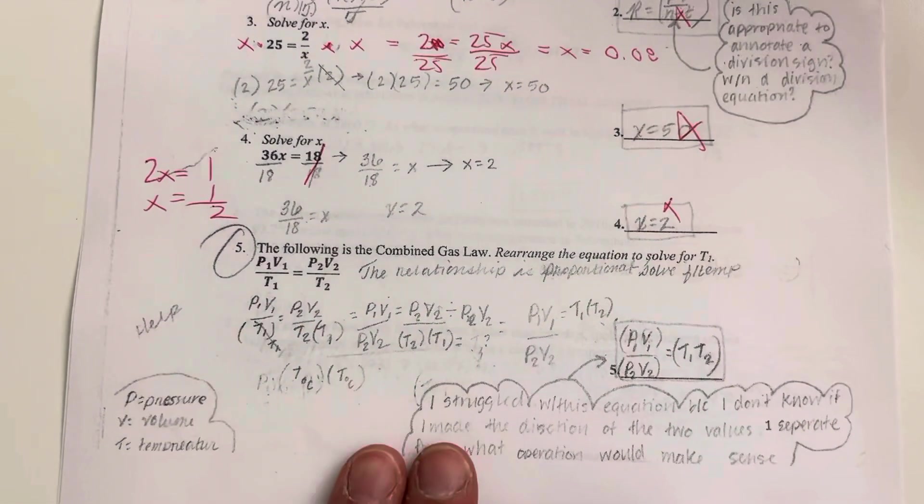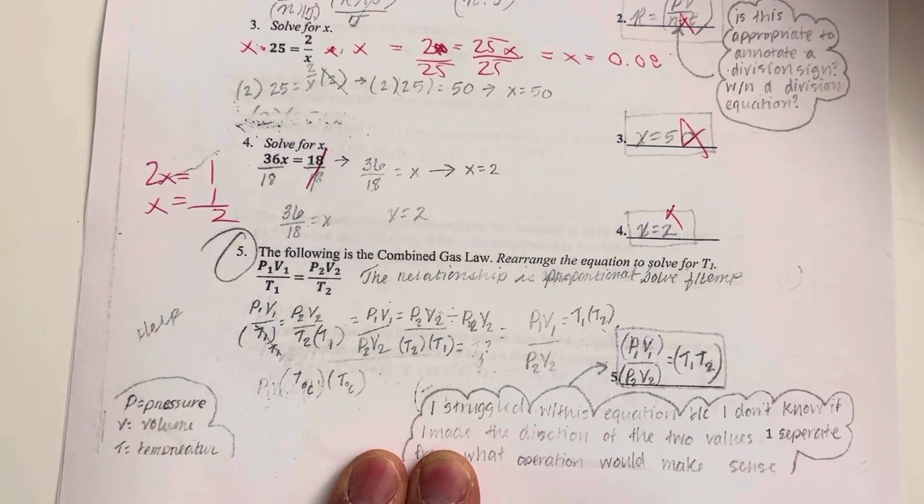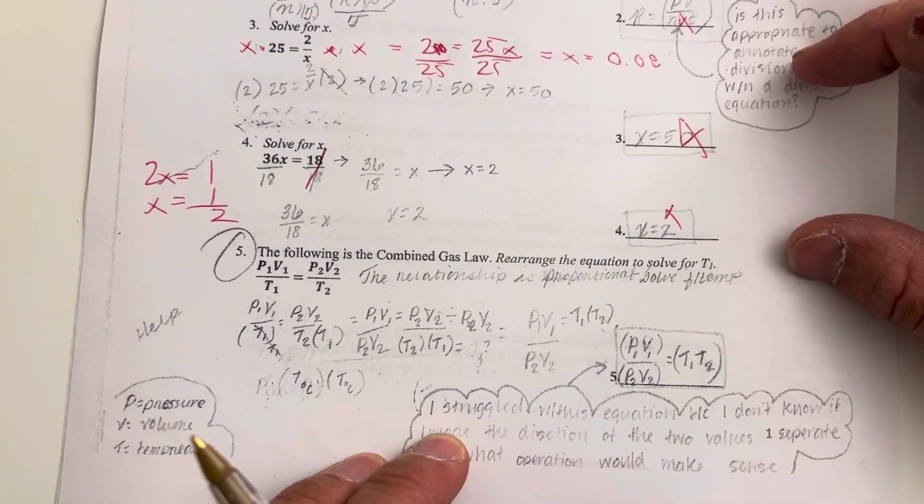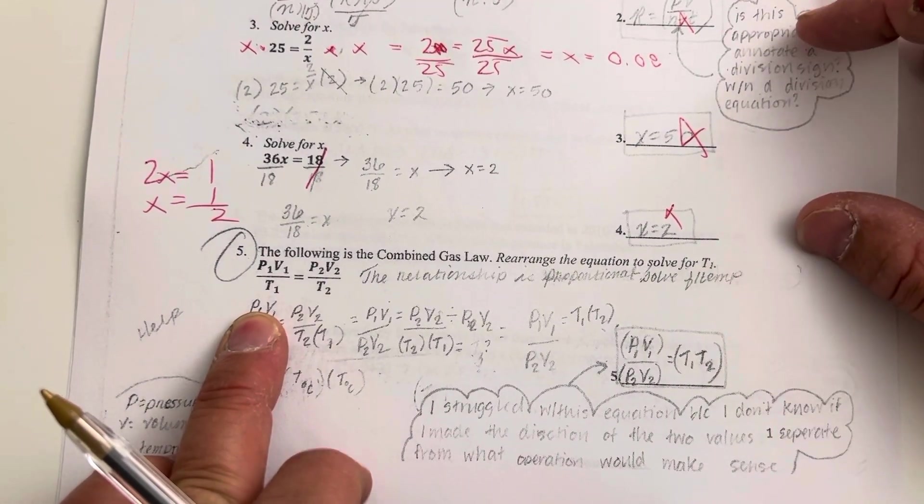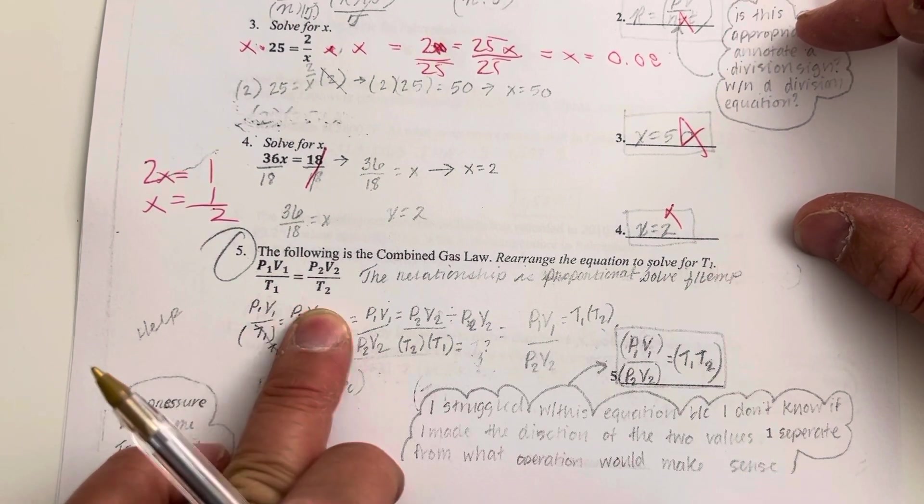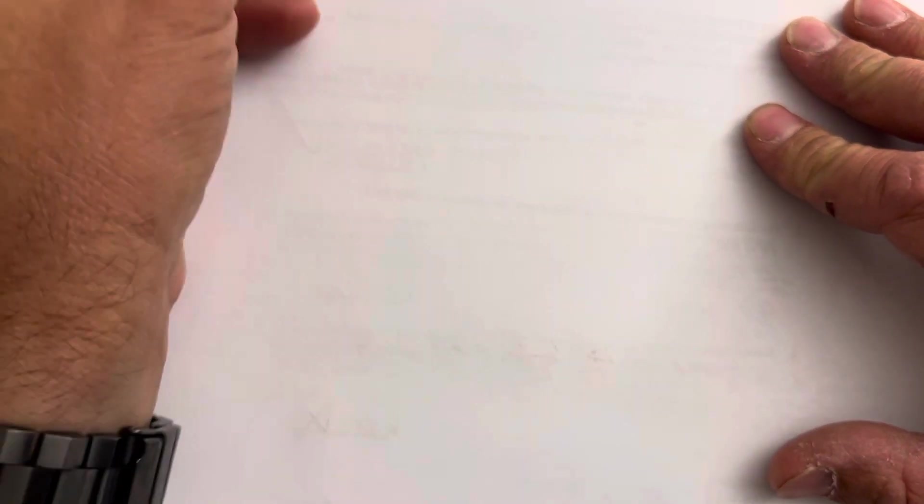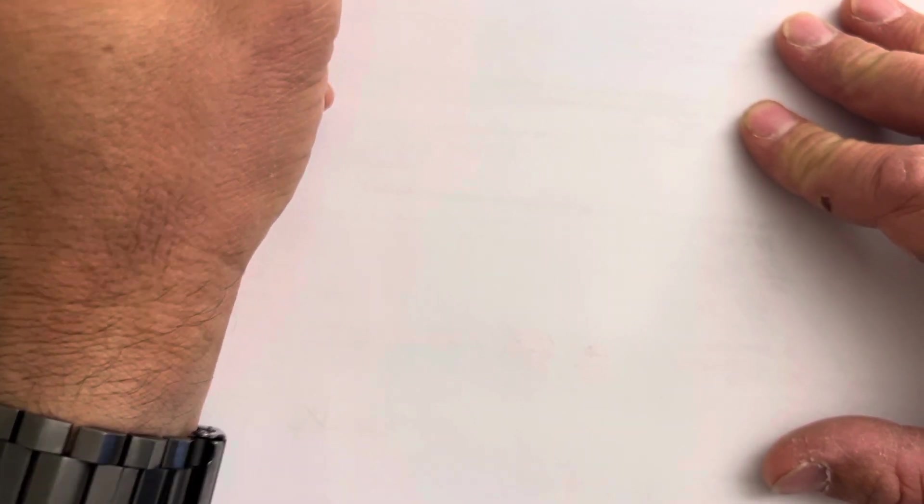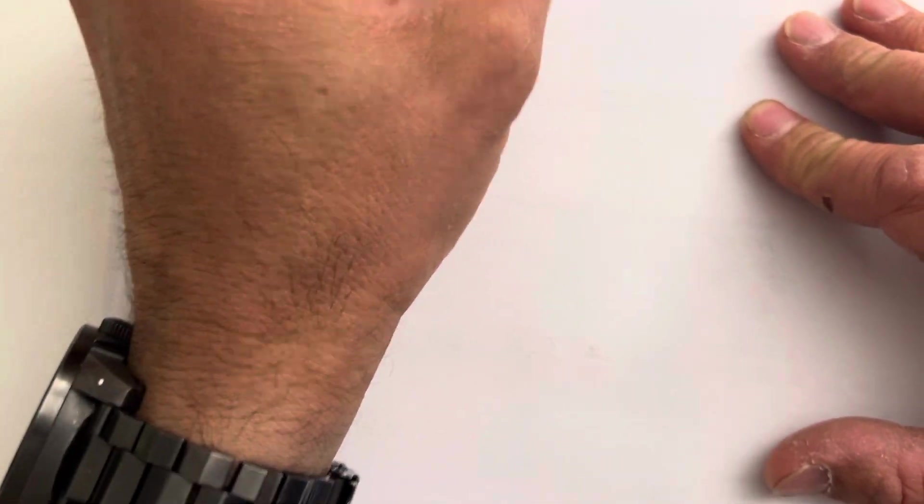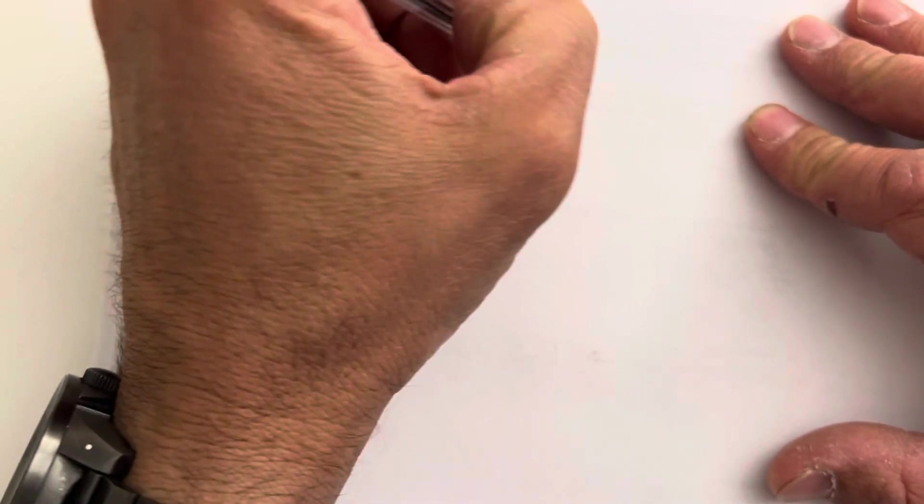For the next one, I'm just going to go over here to the other side. So you have the combined gas law, P1V1 over T1 is equal to P2V2 over T2. And it says solve for T1. So if we have P1 times V1 over T1 is equal to P2 times V2 over T2.